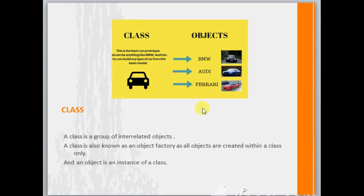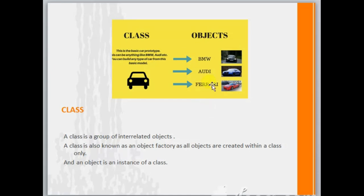Next we'll talk about what is a class. A class is a group of interrelated objects. A class is also called an object factory because all the objects are created within a class only. That is why an object is often referred to as an instance of a class.